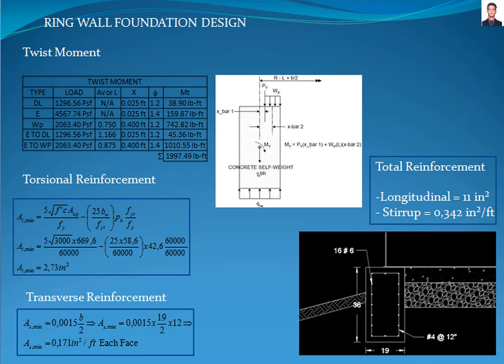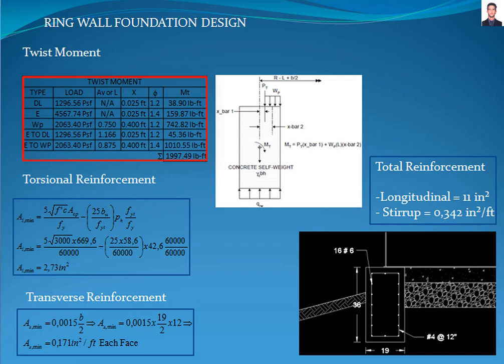The next step is to calculate the torsional moment that acts due to the dead, liquid, and seismic loads on the ring wall foundation, calculating the eccentricities of the loads involved as supported in this picture, and knowing the distance from the edge of the ring wall foundation to the shell and the width of the ring wall foundation. The values of each torsional moment are tabulated in this table. The summation is 1,997.49 pound-feet. Given the dimensions of the ring wall foundation, the torsional moment is too small to produce an inclined fracture in the core of the ring wall foundation.